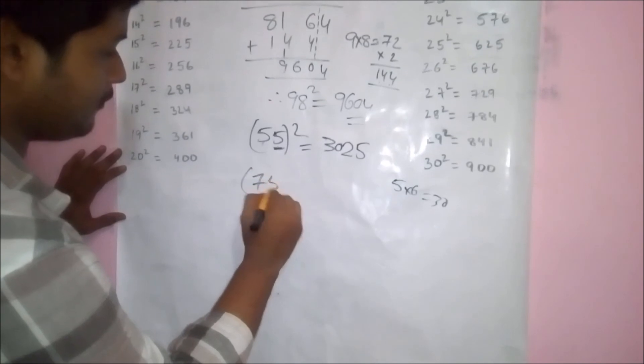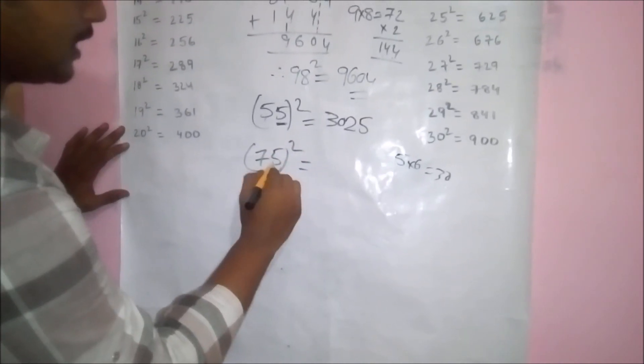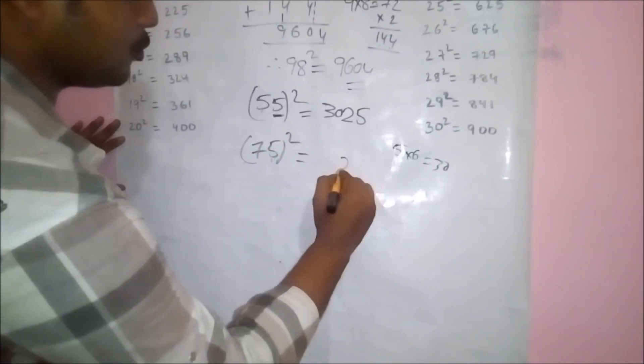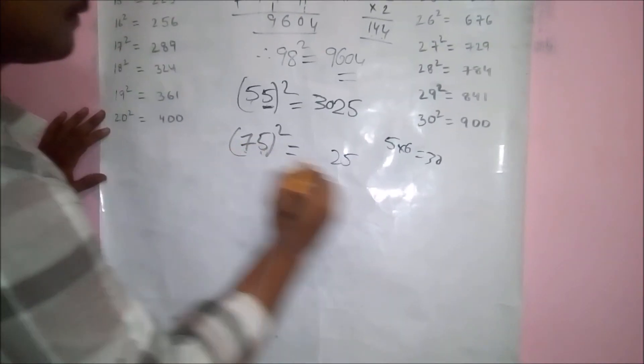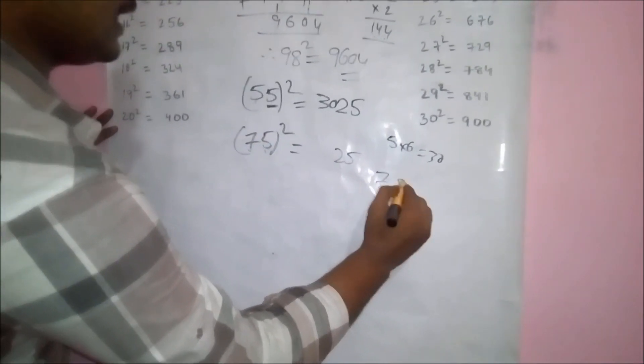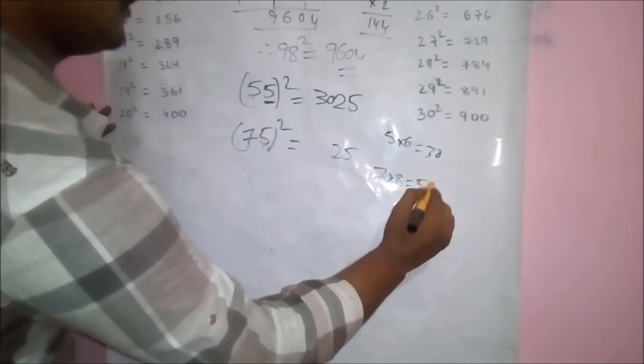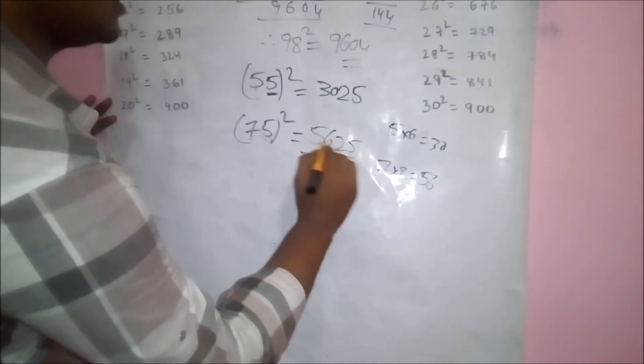Take another example, 75 square. Here, unit digit is 5. Simply square them. 5 square becomes 25. And tens digit, consecutive number. 7, consecutive number is 8. And multiply them both. 7 times 8 is 56. That means answer is 5625.